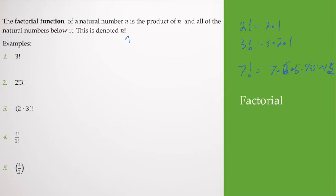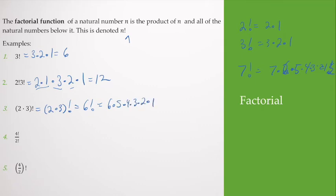So why don't we go ahead and solve a couple of factorial values. So if I have 3 factorial, that's 3 times 2 times 1, which gives me 6. If I have 2 factorial times 3 factorial, that's 2 times 1 times 3 times 2 times 1. Well, 2 times 1 is 2, times 3 is 6, times 2 is 12. Next, if I have 2 times 3 factorial, remember PIMDAS. We need to simplify what's in our parentheses first, so that would give me 6 factorial.